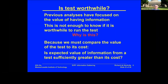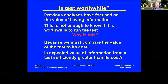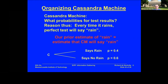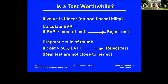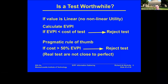The question is: we've got an upper bound, but we need to know the value relative to its cost. Is the expected value of information from a test sufficiently greater than its cost? If the cost of the test is greater than the expected value of perfect information, you can reject the test. A pragmatic rule of thumb is that if the cost is greater than 50% of the expected value of perfect information, it's not worthwhile either.